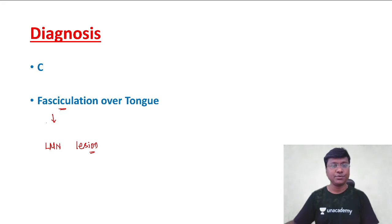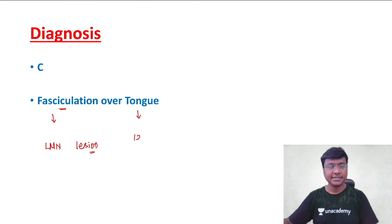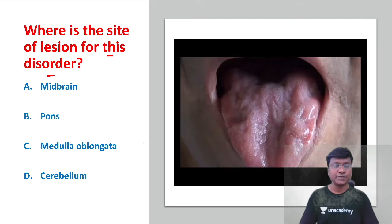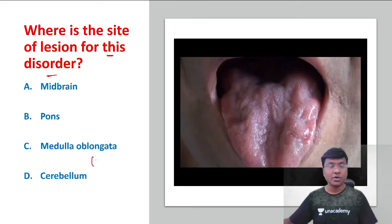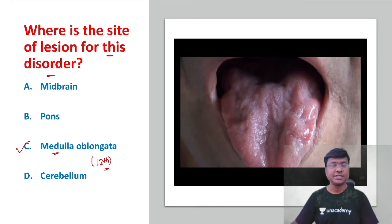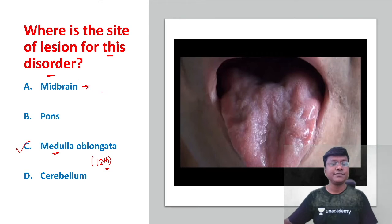Now, what is the particular lower motor neuron supplying the tongue? The lower motor neuron supplying the tongue is the 12th cranial nerve. You should know where the nucleus of the 12th cranial nerve is — it originates from the medulla oblongata. So the site of lesion is within the medulla oblongata.